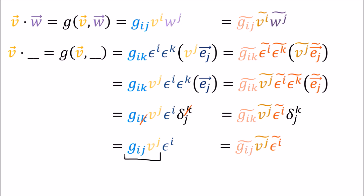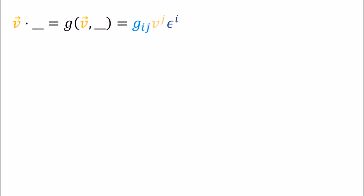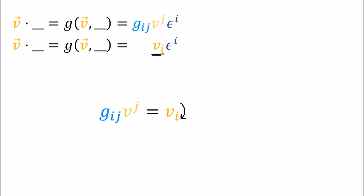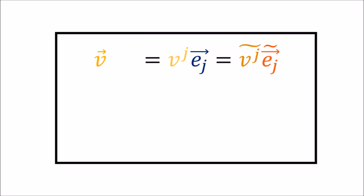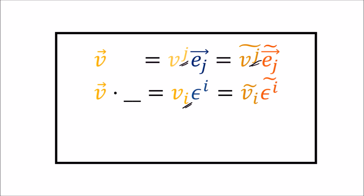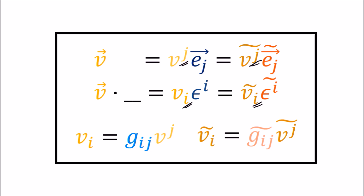We can go through the same process in another basis and get the components of v dot something in the Epsilon tilde basis. As an alternative notation, rather than writing g with downstairs indexes and v with an upstairs index, I'll just write v with a downstairs index. With this notation, it's almost as if the metric tensor components are lowering the index of v's components to give the co-vector components of v dot something. In summary, a vector v can be written with the upstairs versions of its components, and its partner co-vector v dot something can be written with the downstairs versions.